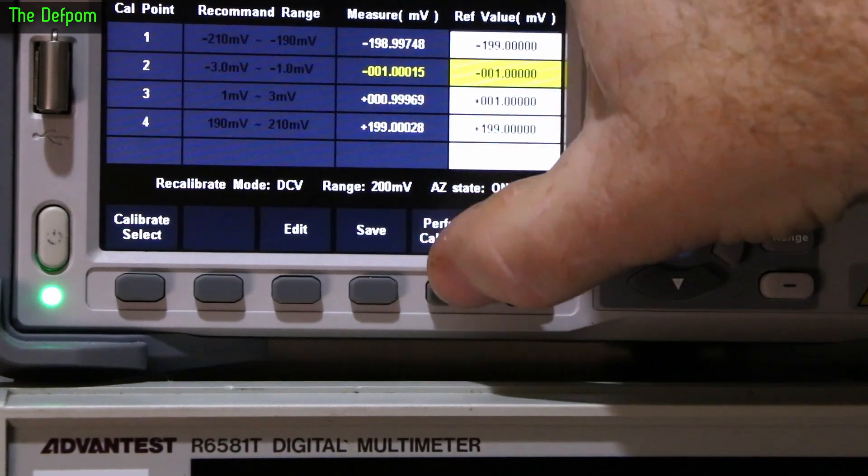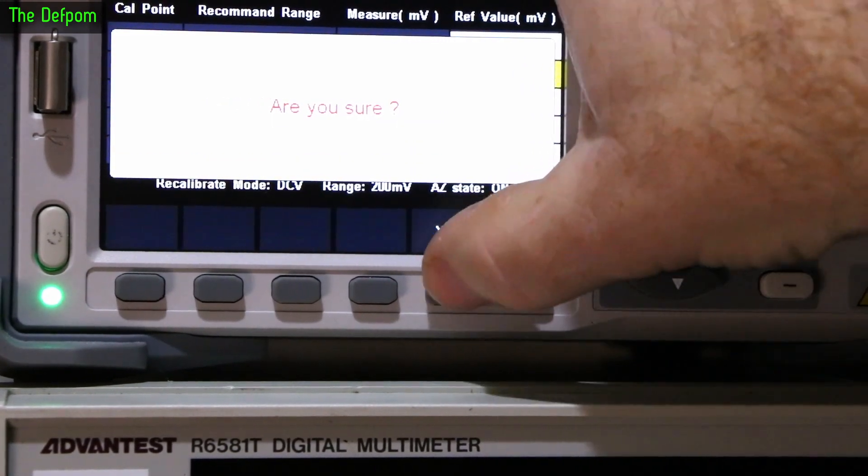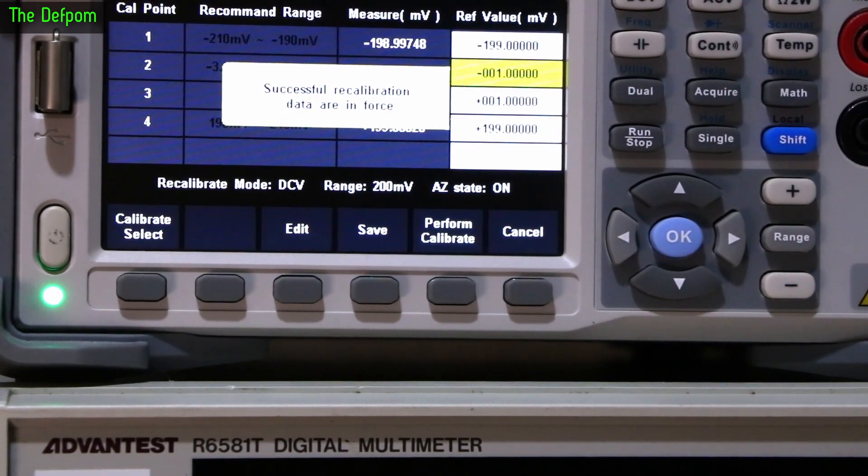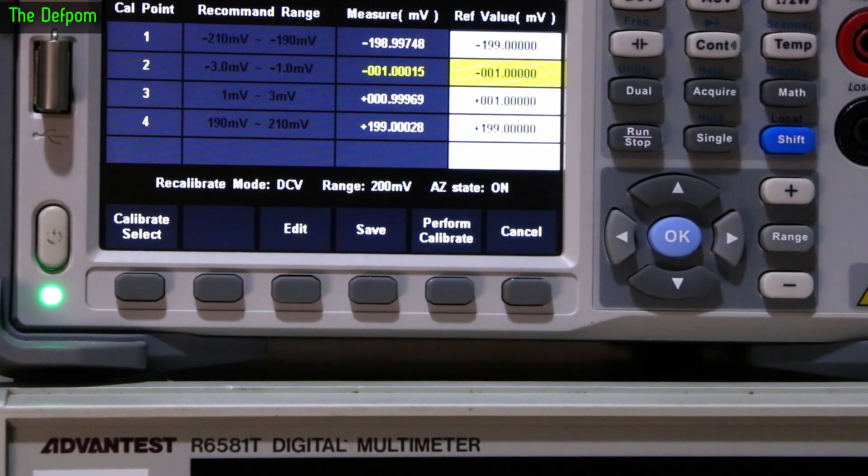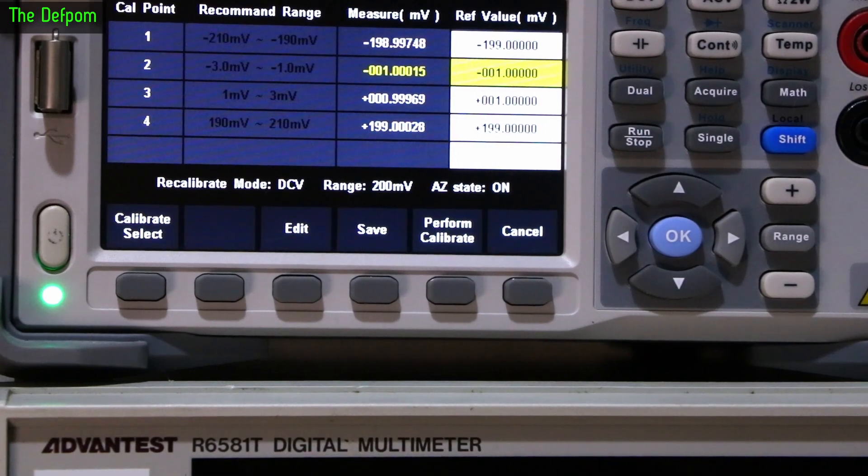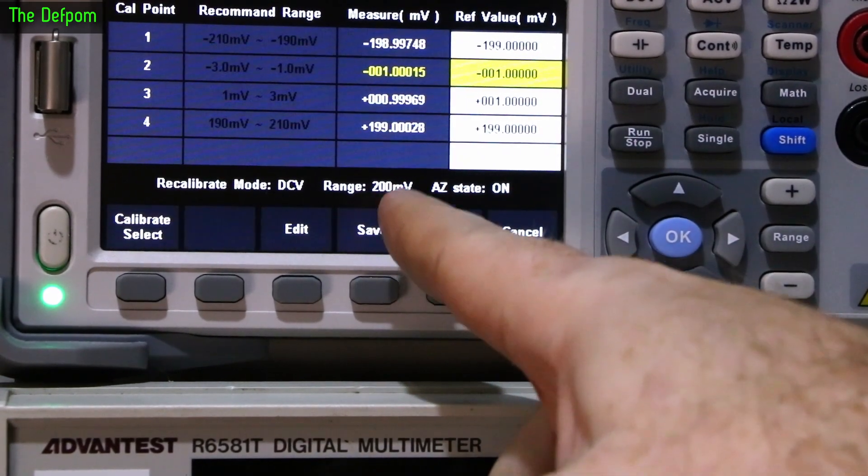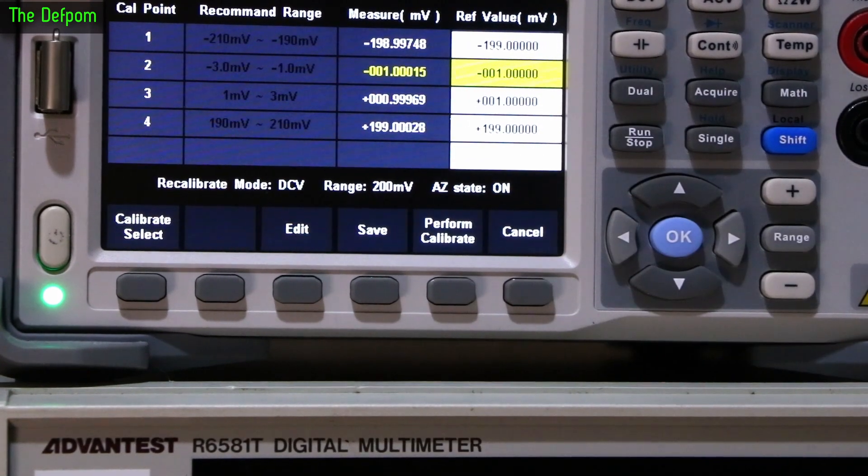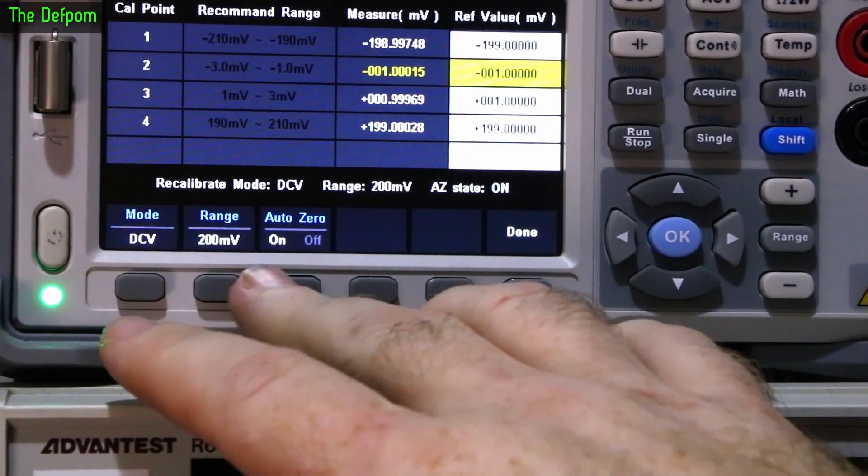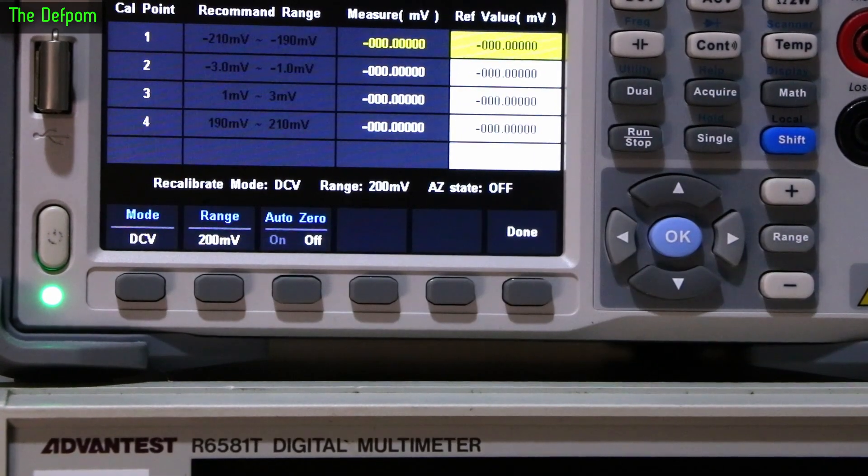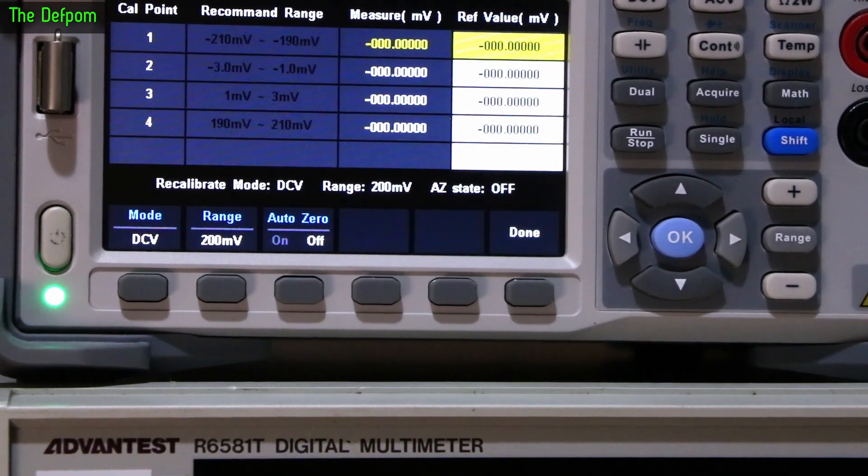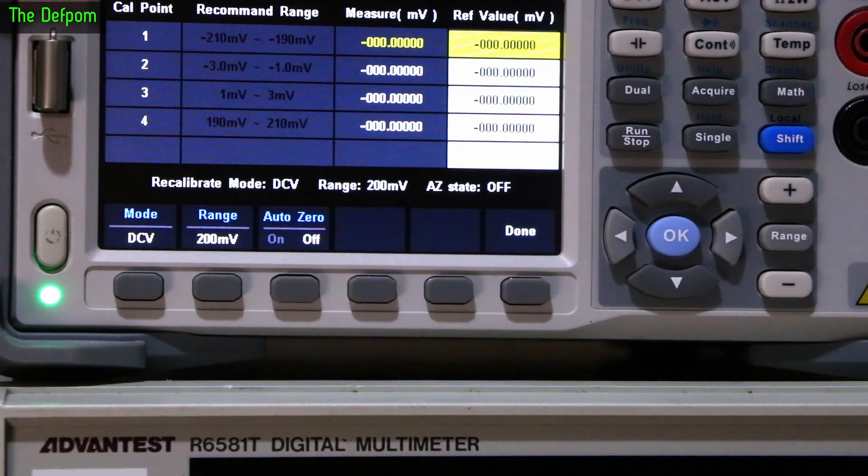Now we do perform calibrate. Am I sure? Yes. Data was enforced apparently. So that means it should now be reading correctly in all the particular modes. Auto zero on and the 200 millivolt range is now calibrated. We have to repeat this now for auto zero off. That will calibrate the 200 millivolt range completely.